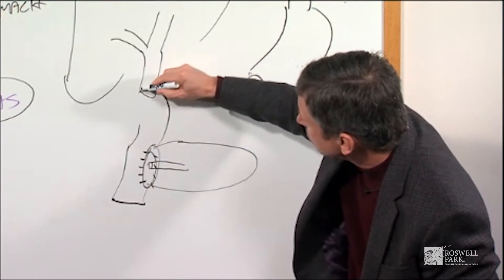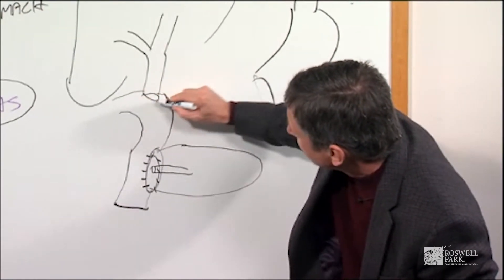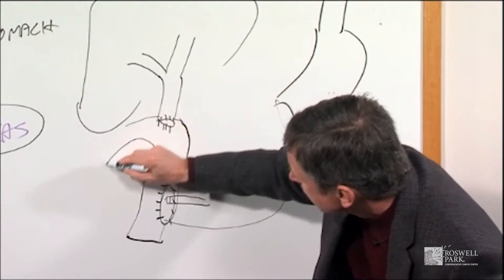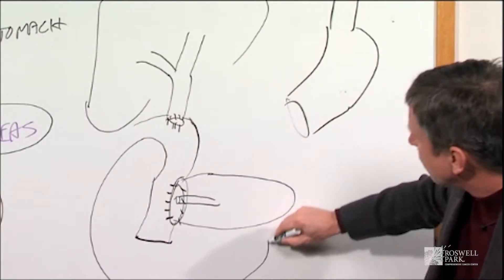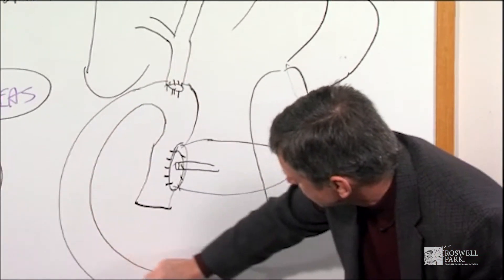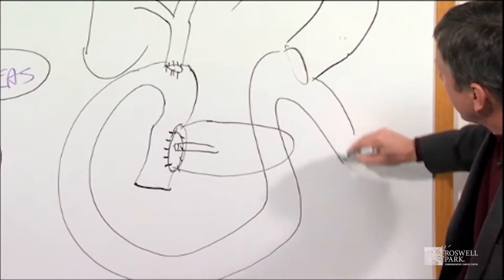And then the next thing we do is hook up the bile duct, which is where the yellow bile comes down from the liver, and then we loop it around over the pancreas like so and hook up the stomach.